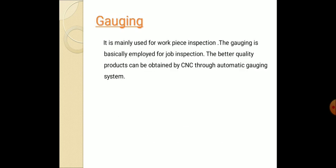Next, the gauging. What is this gauging? As you know the gauge is used for the inspection work. In mechanical industries we find lot of gauging depends upon the job nature. Basically the gauging is used for the work piece inspection, basically employed for the job inspection. Better quality products can be obtained by CNC through automatic gauging system.